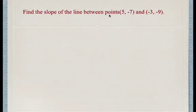You're asked to find the slope of the line between two points. We're given (5, -7) and (-3, -9).